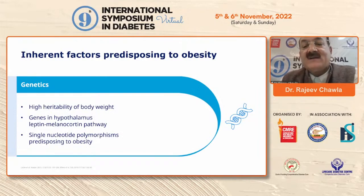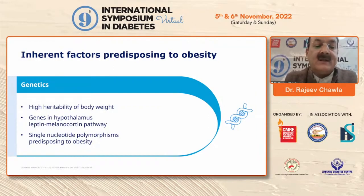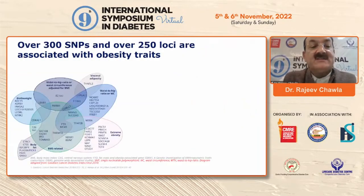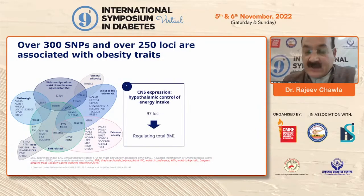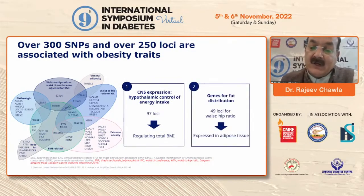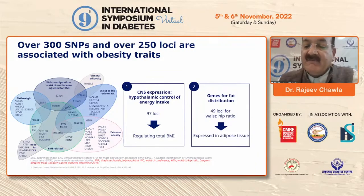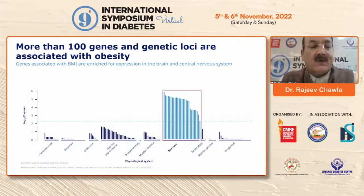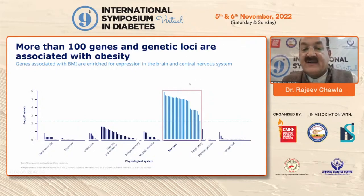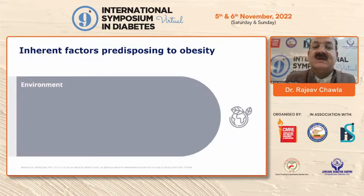When we talk about factors predisposing to obesity, it is not simply genetics — though we know there is a higher heritability of body weight. There are genes in the hypothalamus, leptin, melanocortin pathway, and single nucleotide polymorphisms (SNPs) which predispose to obesity. There are almost more than 300 SNPs identified with over 250 loci associated with obesity traits, regulating not only total BMI but also waist-hip ratio expressed in adipose tissue. More than 100 genes and genetic loci are associated with obesity, and genes associated with BMI are enriched for expression in the brain and central nervous system.